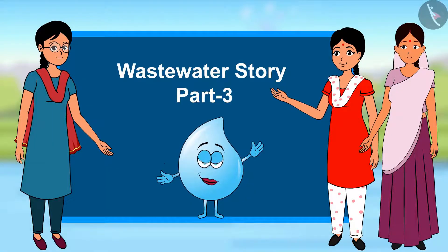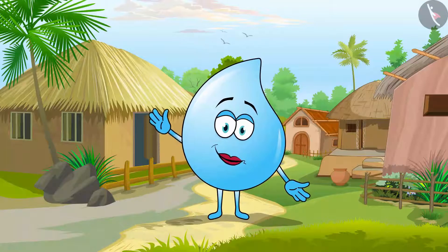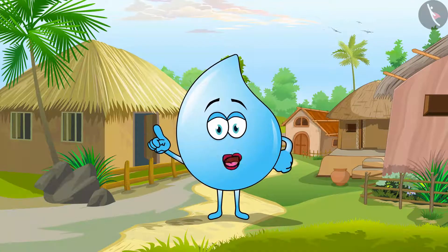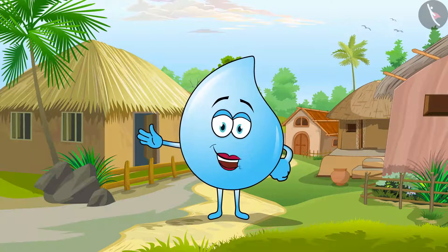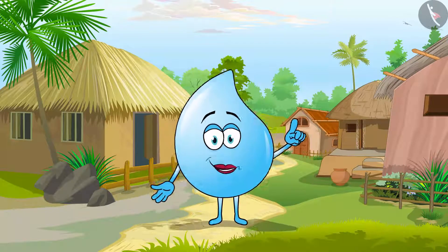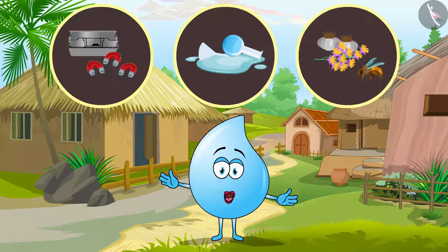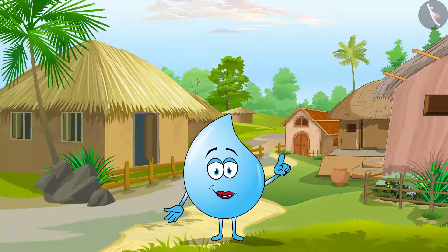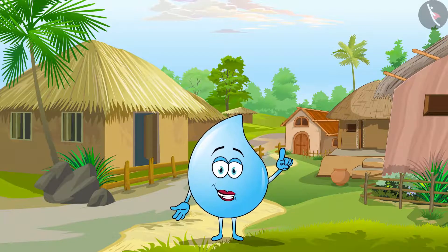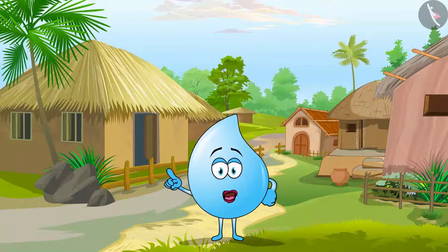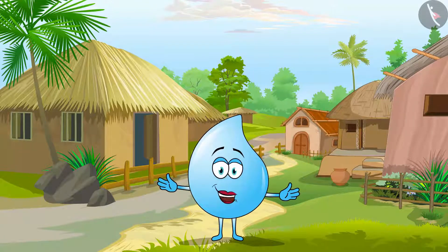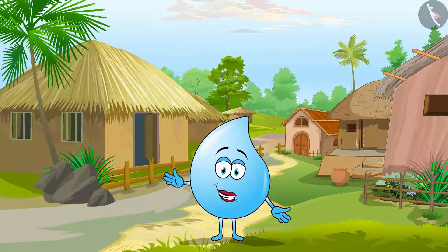This is wastewater story part 3. Hello children, you learned about wastewater treatment in the previous video. Wastewater has to go through four to five stages to be treated. This treatment involves physical, chemical, and biological processes. We all have a responsibility to have good housekeeping practices so that we can reduce or completely remove waste materials and pollutants from the water. The purpose of this video is to learn about good housekeeping practices, cleanliness, and sanitation in public places.